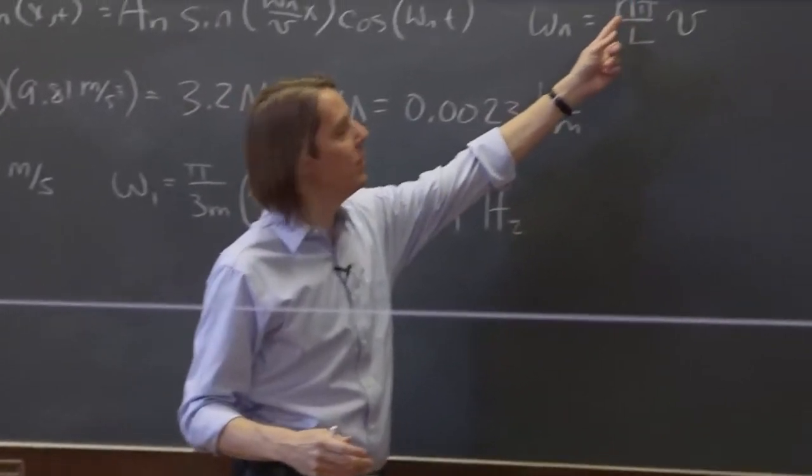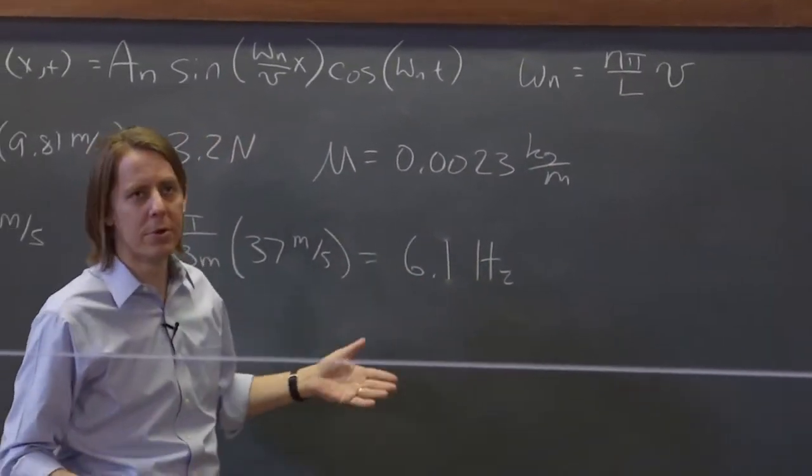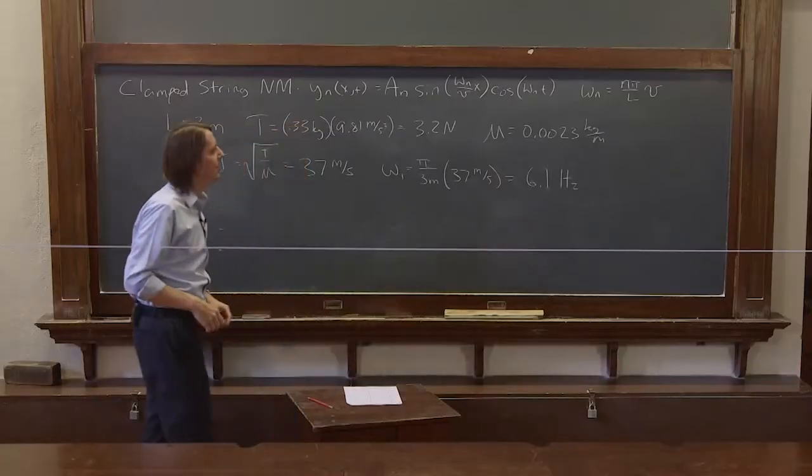So omega_1 should be 6.1 hertz, and then omega_2, it's just linear with n. Omega_2 is 12 hertz, 18, 24, 30, 36, 42, 48, goes up by about 6, but not exactly.